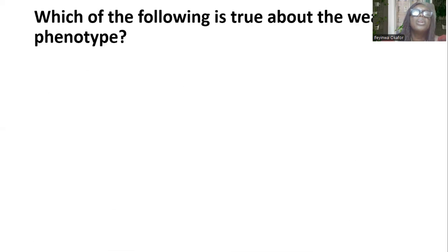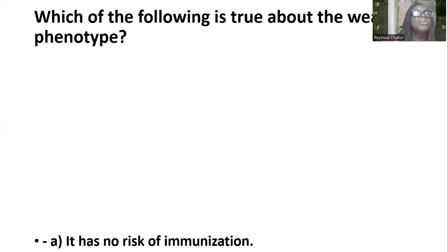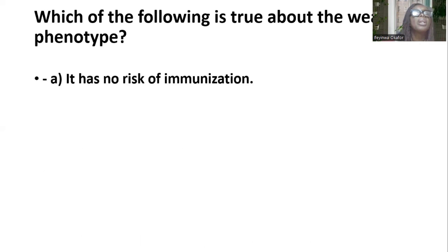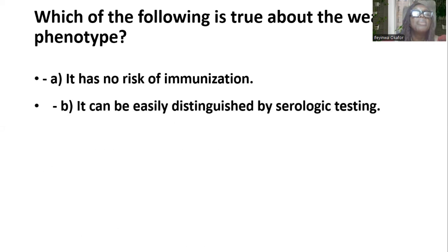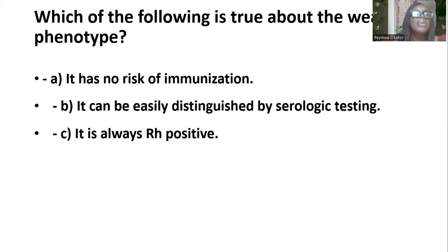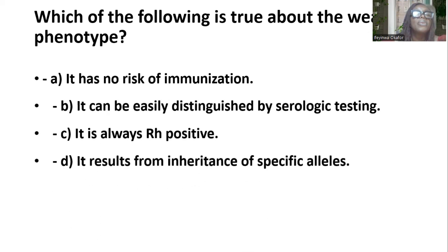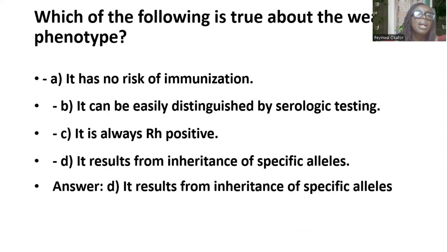Which of the following is true about the weak D phenotype? Options are: it has no risk of immunization; it can be easily distinguished by serological testing; it is always RH-positive; it results from inheritance of specific alleles. And the answer is D — it results from inheritance of specific alleles.